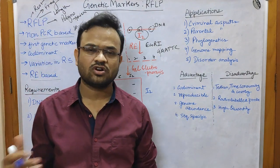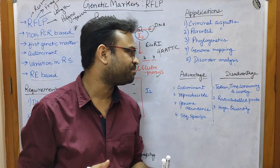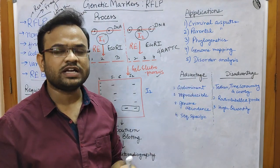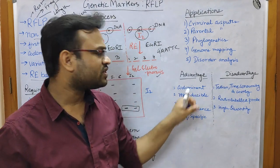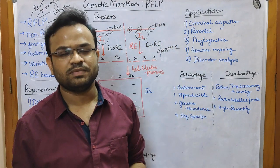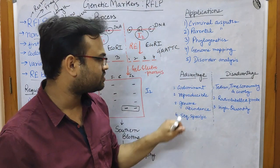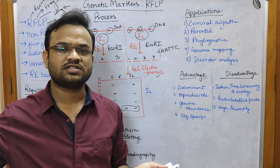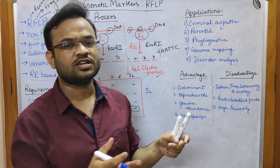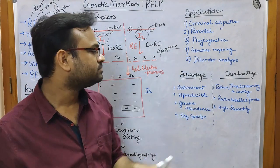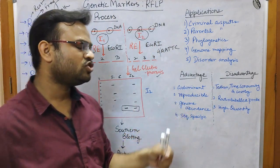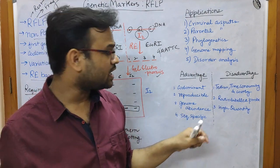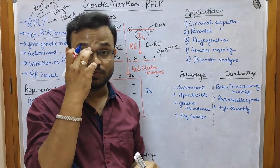Advantages of RFLP: First, it is codominant — it can easily recognize homozygous and heterozygous regions. Second, reproducibility — results obtained in one lab are highly reproducible in another lab. Third, genome abundance — restriction sites are present throughout the genome, making them easy to utilize. Fourth, sequence specificity — restriction enzymes cleave only at specific sequences, making this a very specific technique.